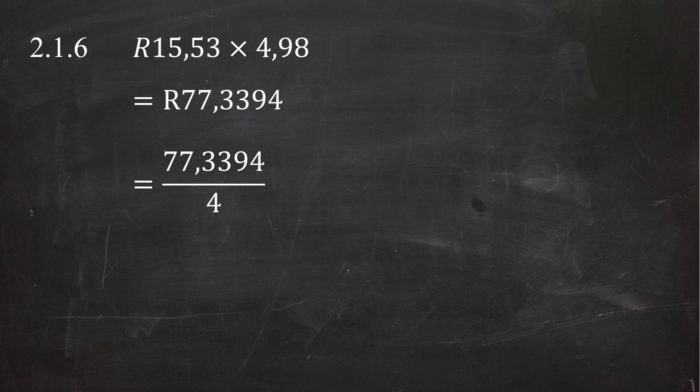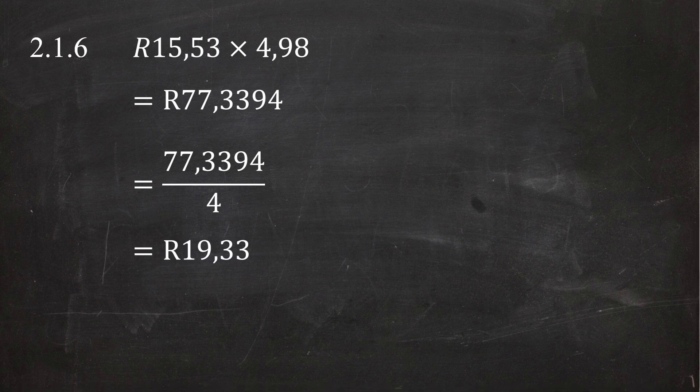The cost of one muffin in Rand equals R77.3394 divided by 4 muffins, which equals R19.33. Rounding this to the nearest Rand gives a cost of 19 Rand per muffin.